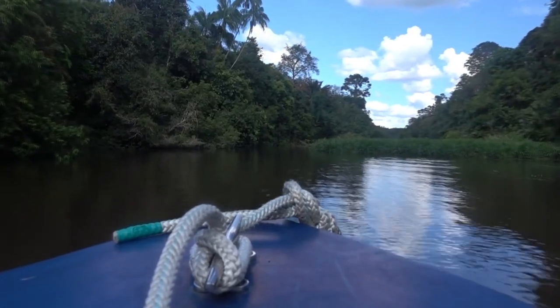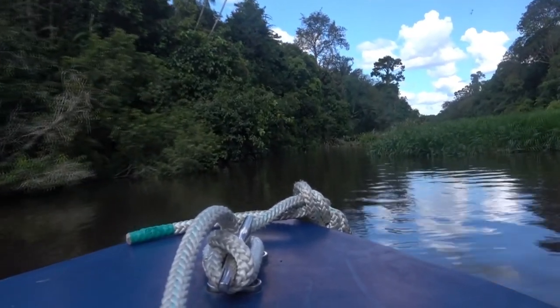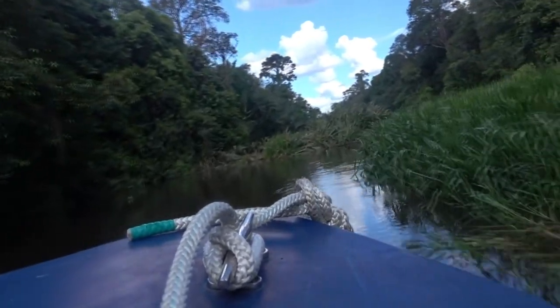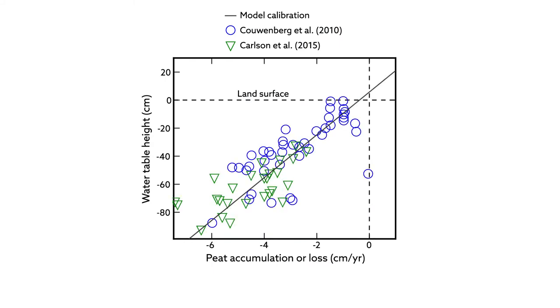Because peat accumulation occurs via waterlogging of plant remains, which quickly degrade in the presence of oxygen, its deposition is determined in part by the proportion of time exposed to air. And this, in turn, is driven by the depth of the water table, which rises and falls with rainfall and discharge from the peatland into rivers.